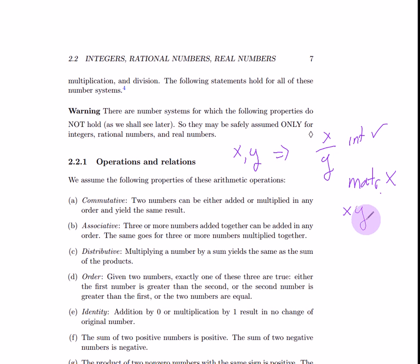You either have to write x times y inverse or y inverse times x. And those two things might be different. Now, I just give this example to show you that you cannot assume the properties that you are familiar with will also hold for other number systems.